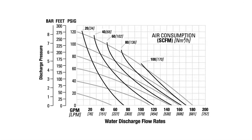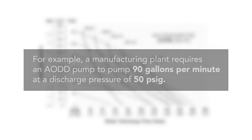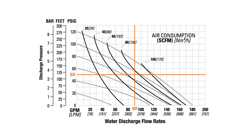The AODD pump performance curve defines the pump's performance based on a specific operating point, utilizing the required gallons per minute at a certain discharge pressure. For example, a manufacturing plant requires an AODD pump to pump 90 gallons per minute at a discharge pressure of 50 PSIG. To find out how well the pump will perform, find 90 gallons per minute along the horizontal axis, then follow the line up to 50 PSIG on the vertical axis. The area where these two axes intersect is the operating point.